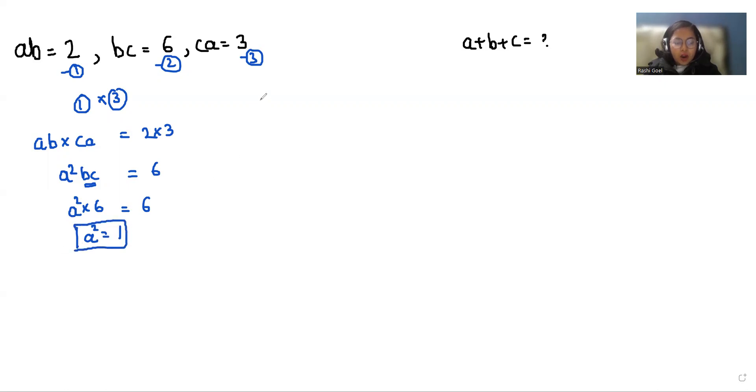Similarly, now I'm going to divide second equation by first. So BC by AB equals 6 by 2. So we can cancel out this B with B. And so C by A equals 3. And C equals 3 times A.